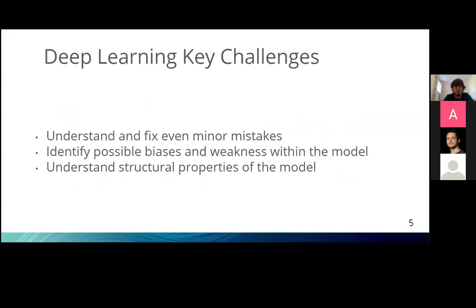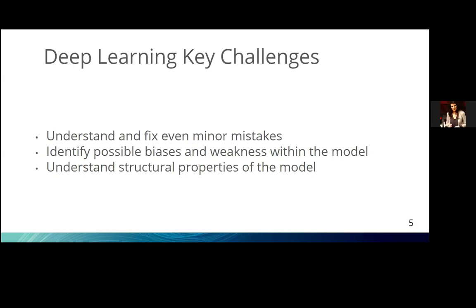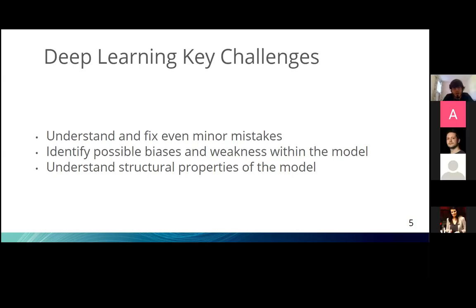This leads to key challenges in deep learning. First, it is difficult to understand and fix mistakes in the model — when we detect a misprediction, it's hard to understand why it happened and even harder to fix it without knowing what the parameters represent. Second, it's difficult to identify possible biases and weaknesses, and to guarantee the model is fair and free of discrimination. Third, understanding structural properties — the roles of specific neurons or layers, and how target classes relate to each other — is not trivial.